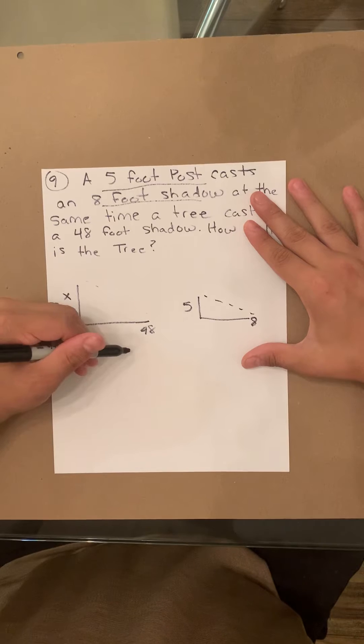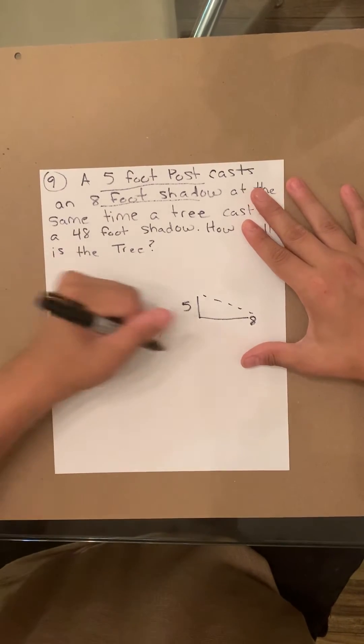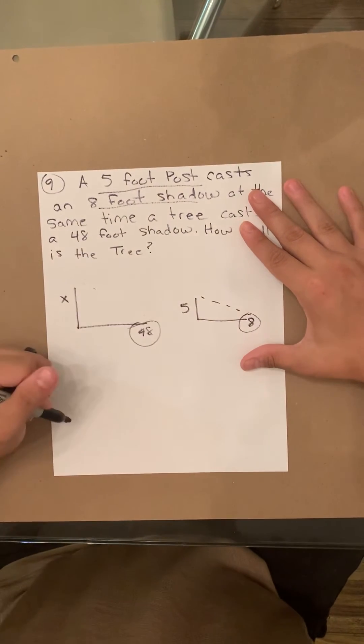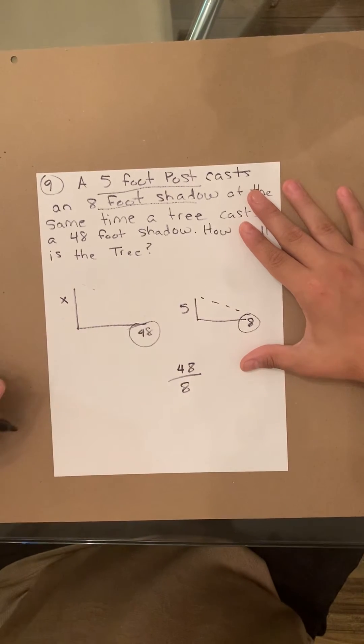So it's very simple. All you're going to do is take the shadow for the X and the shadow for the tree that's 5 feet, and turn it into a fraction: 48 over 8.